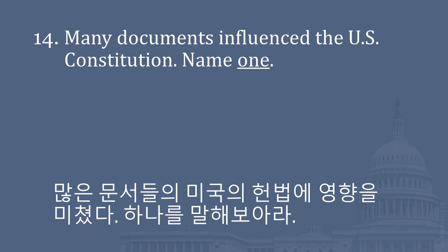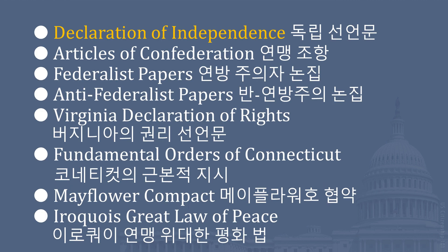Many documents influenced the U.S. Constitution. Name one. Declaration of Independence. Articles of Confederation. Federalist Papers. Anti-Federalist Papers. Virginia Declaration of Rights. Fundamental Orders of Connecticut. Mayflower Compact. Iroquois Great Law of Peace.